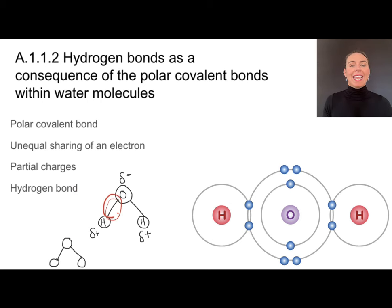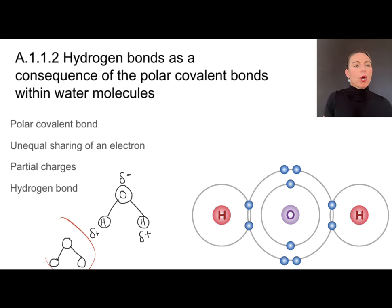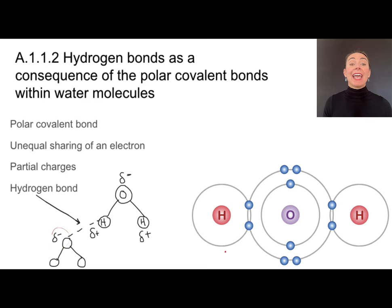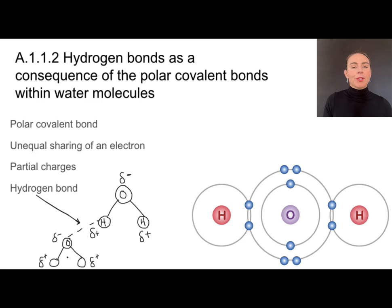The covalent bond is drawn with a solid line — that's the proper notation — and it consists of a bond within a water molecule. Between two separate water molecules, we have a special type of bond called a hydrogen bond, and we use a dashed or dotted line for that. A hydrogen bond is an attraction between the partially negative end of one molecule and the partially positive end of a different molecule. So when drawing multiple water molecules, we want to show partial charges, atoms present, and the hydrogen bond between them.